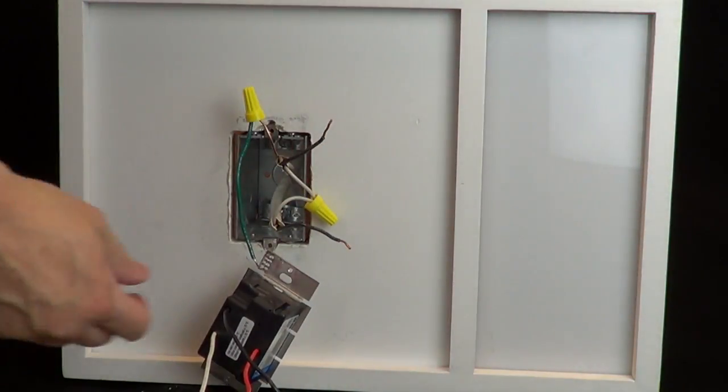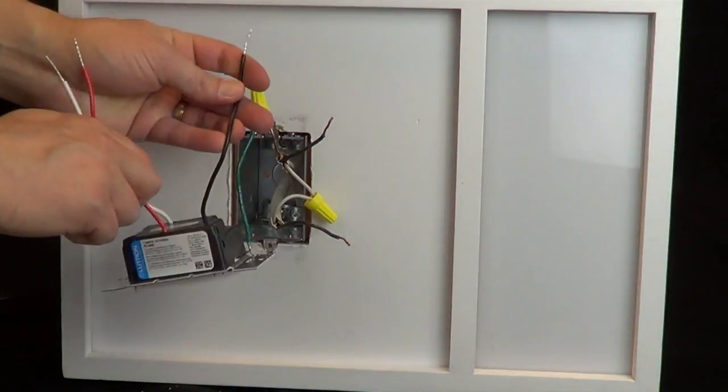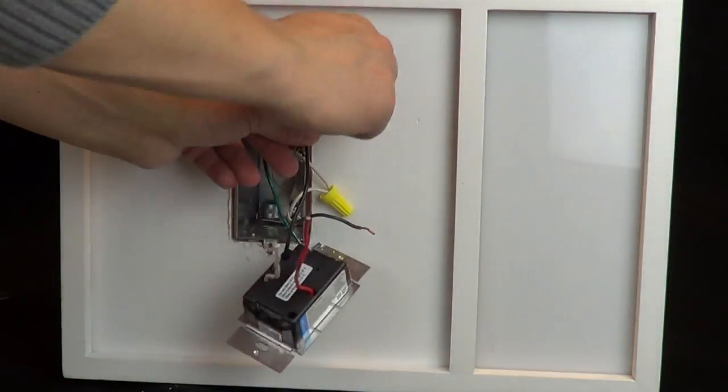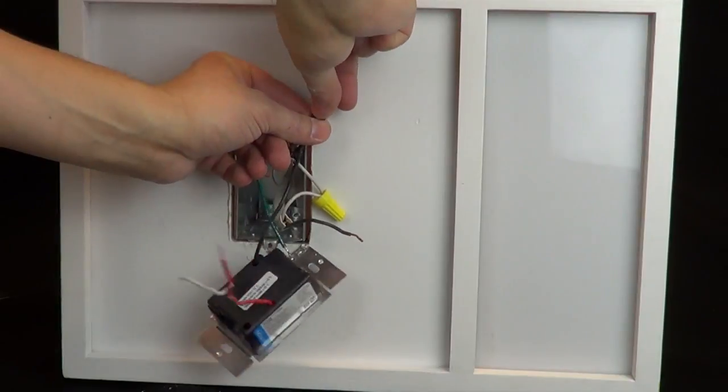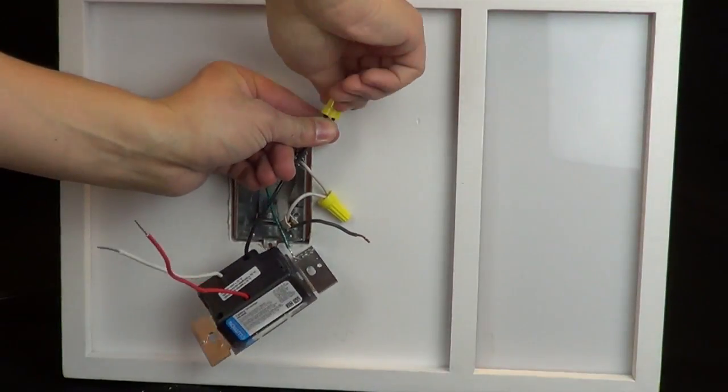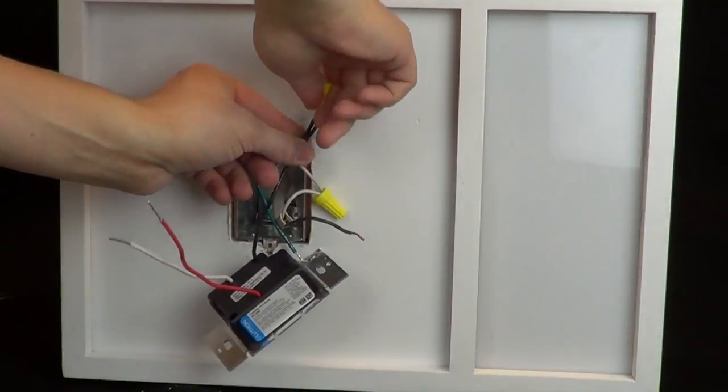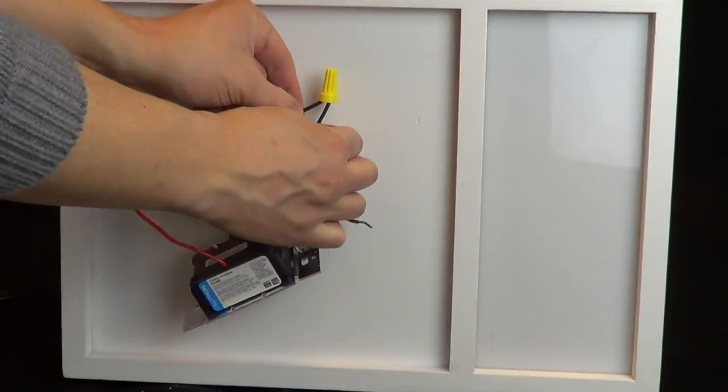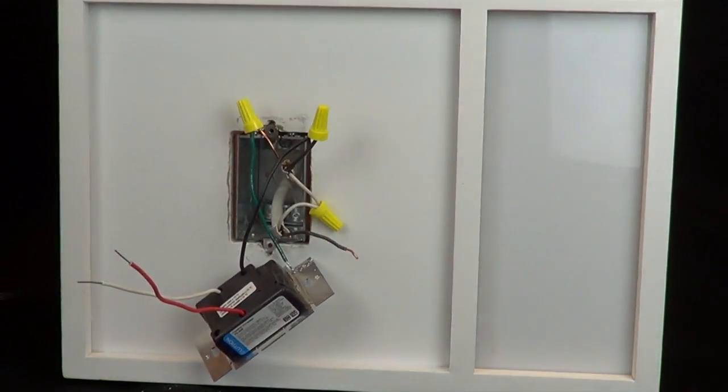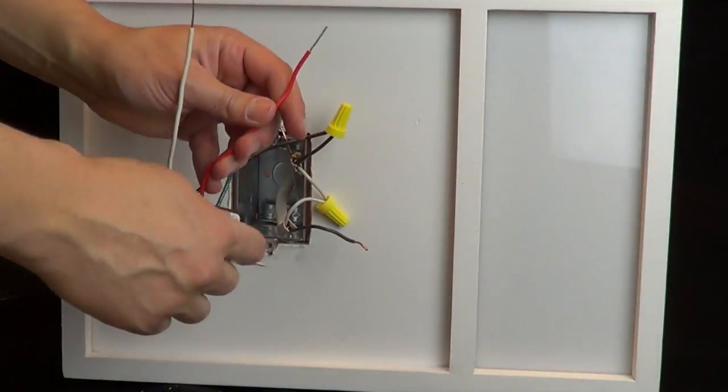Next, connect the hot live wire from the old switch to the black wire on the dimmer using the wire cap. Connect the remaining wire that goes to the white wire to the red wire on the control.